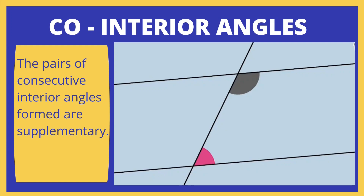The next set of angles is co-interior angles, or consecutive interior angles. When two lines are cut by a transversal, the pair of angles on one side of the transversal and inside the two lines are called consecutive interior angles. Both angles are on the same side of the transversal and inside the two parallel lines. If two parallel lines are cut by a transversal, then the pairs of consecutive interior angles formed are supplementary — meaning the sum of these two co-interior angles is equal to 180 degrees. This is the first pair and second pair is this.